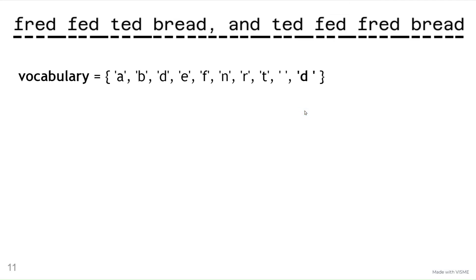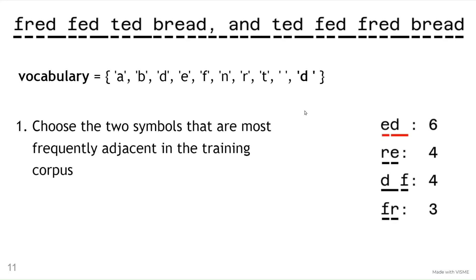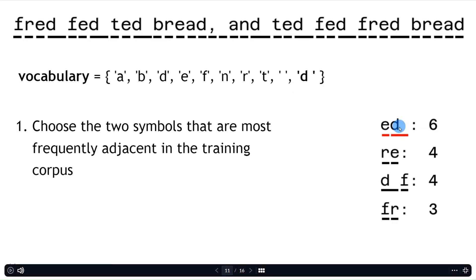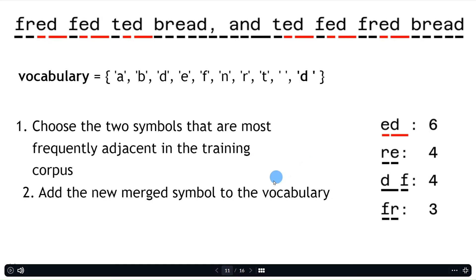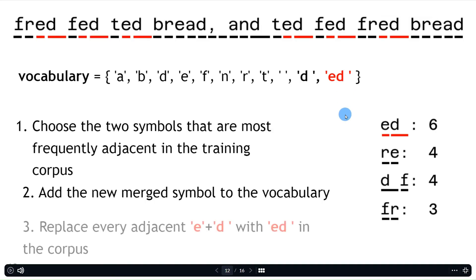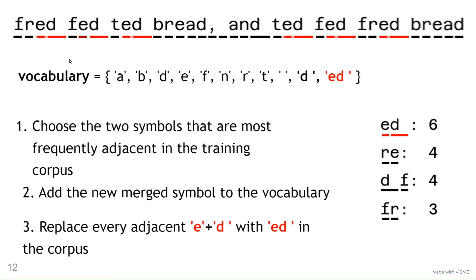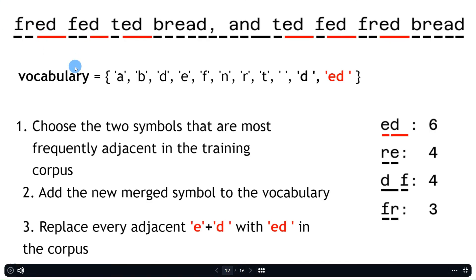Let's go through the second iteration. Again, we choose the two symbols most frequently adjacent. This time E followed by D-space occurs six times, R followed by E occurs four times, D-space followed by F occurs four times, and F followed by R occurs three times. So E followed by D-space is our most frequently occurring pair. We highlight those occurrences, add the new merge symbol E-D-space to the vocabulary, then find all occurrences of E plus D-space and merge them into the single token E-D-space. That's the second iteration done.